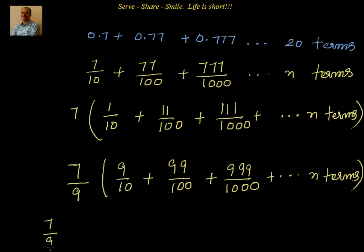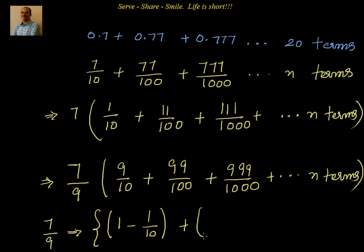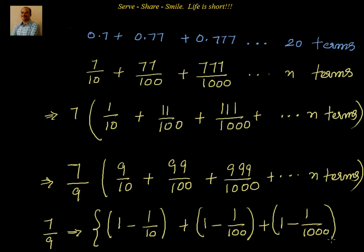So the expression becomes 7/9 times the sum of terms written as (1 − 1/10) + (1 − 1/100) + (1 − 1/1000), and so on up to n terms. This rewrites 9/10 as 1 − 1/10, 99/100 as 1 − 1/100, and 999/1000 as 1 − 1/1000.